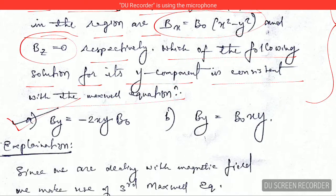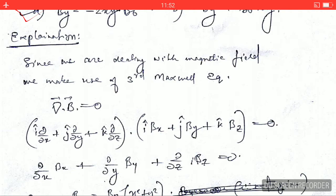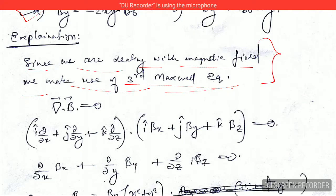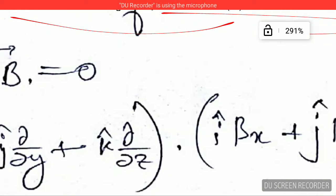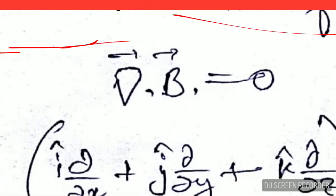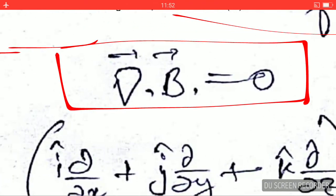Since we are dealing with the magnetic field, we make use of the third Maxwell equation. Why am I using the third Maxwell equation? Because we are dealing with the magnetic field and the third equation contains the magnetic field. This is the Maxwell third equation, you can remember this.